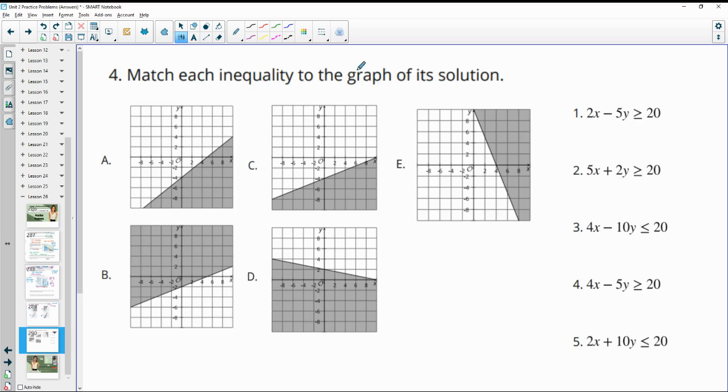Number 4, match the inequality to the graph of its solution. So let's take a look at the x and y intercepts. So if we divide by 2 here, we get x equals 10. And if we divide by the negative 5, we get y equals negative 4. So let's go look for x equals 10 is here. And this one's at negative 4. So that's good. And let's see if any others are at 10 and negative 4. So we don't see any others. So number 1 goes with C.